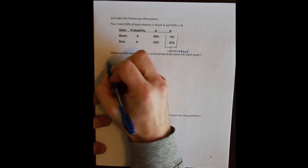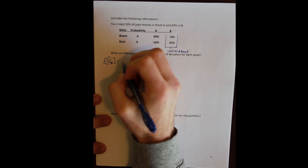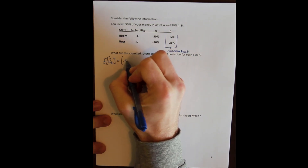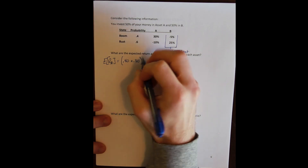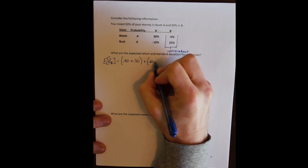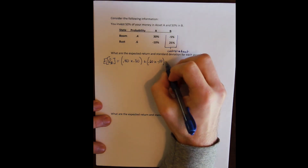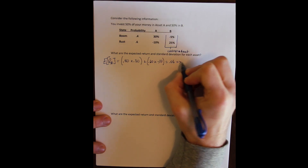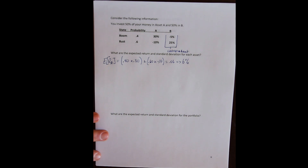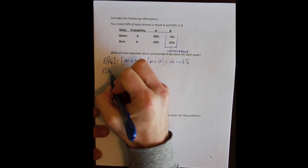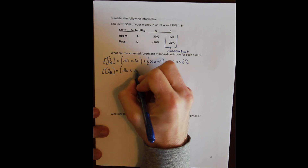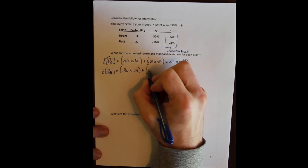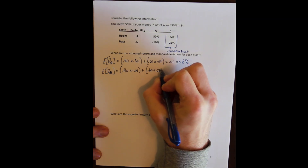Let's calculate the expected return and standard deviation for each asset. The expected return for asset A is the probability-weighted actual return: a 40% probability of a boom where asset A returns 30%, plus a 60% probability of a bust where asset A loses 10%, giving an expected return for asset A of 6%. For asset B, the expected return is the 40% probability of a boom where asset B loses 5%, plus the 60% probability of a bust where asset B makes 25%.